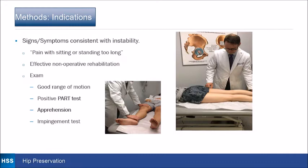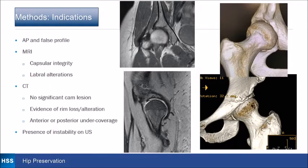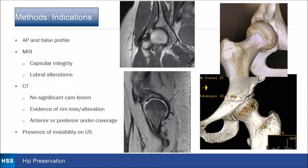The X-rays obtained preoperatively are AP and false profile. MRI was used to look for capsule integrity or labral alterations, as seen in two examples where the capsule is open in the lateral portion and anteriorly, and in another MRI there's really nothing that looks like a labrum. CT scans show rim alterations from trimming, usually no significant CAM lesion, evidence of rim loss, anterior or posterior undercoverage, and the presence of instability on dynamic ultrasound.